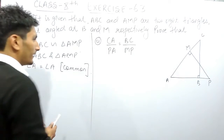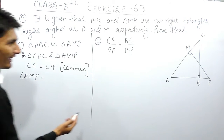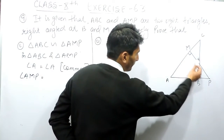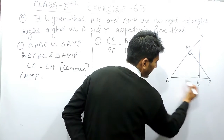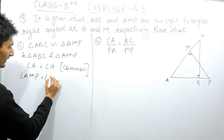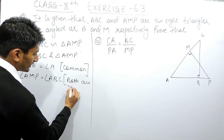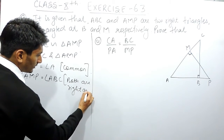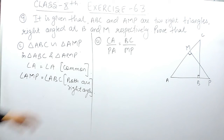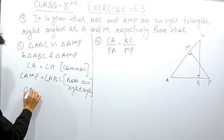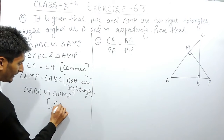These two right angles must also be equal. So I can say that angle AMP equals angle ABC, as both are right angles of 90 degrees. In both triangles, two angles are equal. So if two angles are equal, I can confirm that triangle ABC is similar to triangle AMP by the Angle-Angle (AA) property.